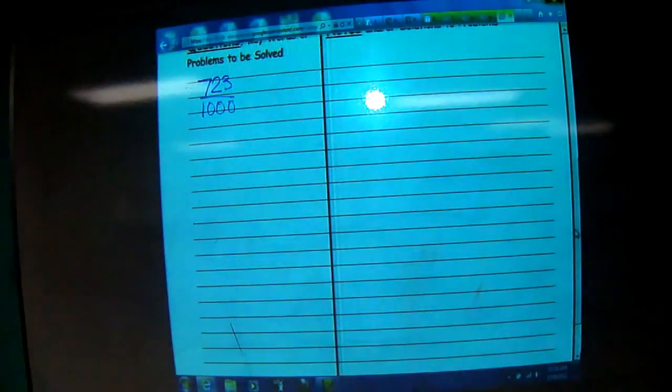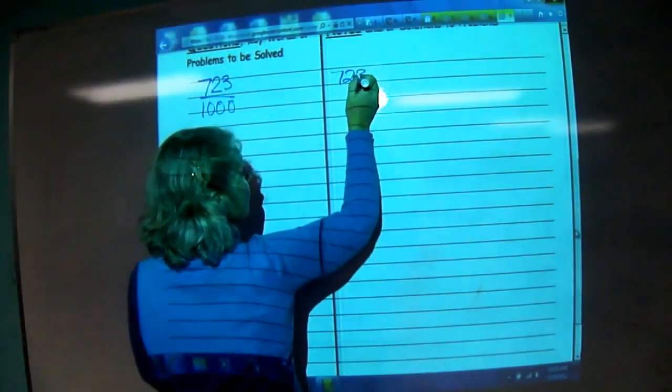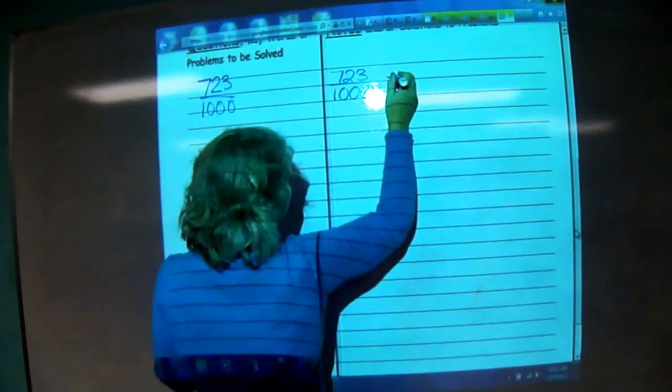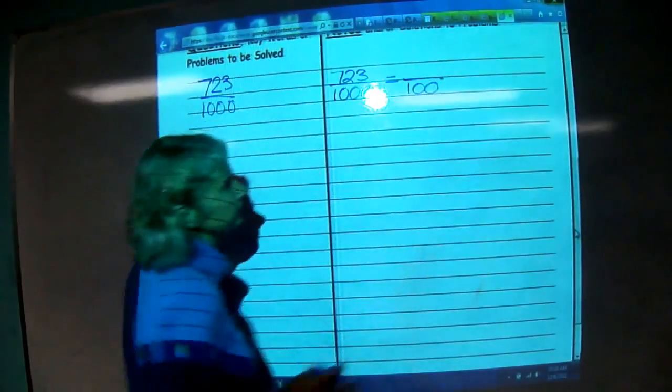723 is to 1,000. So we're going to take 723 is to 1,000, and we want to turn it into something is to 100.